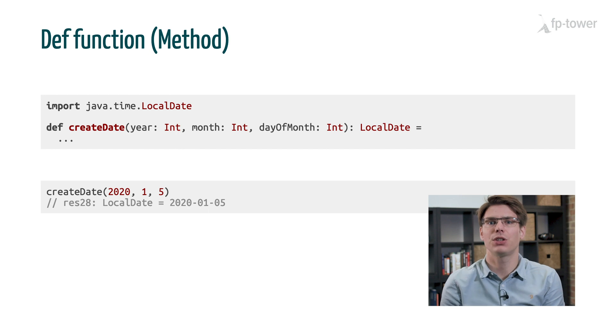Now, let's have a look at def functions or methods. Def functions are the most idiomatic way to create functions in Scala. Here, for example, we have createDate. It's a method that takes 3 int, a year, a month, and a day of the month, and it returns a java time local date, something that represents a calendar date, such as the 5th of January 2020. One important characteristic of def functions is that everything is compacted together. The name of the function, the name of its arguments and their types, the output type, and the body of the function.